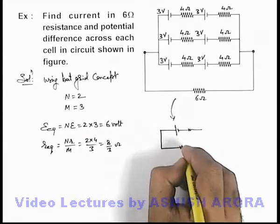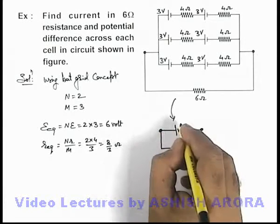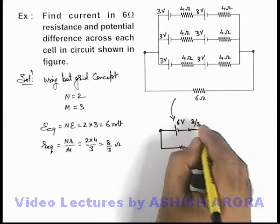And this 6 ohm resistance can be connected across this group, where the battery EMF is 6 volt and internal resistance is 8 by 3 ohms.